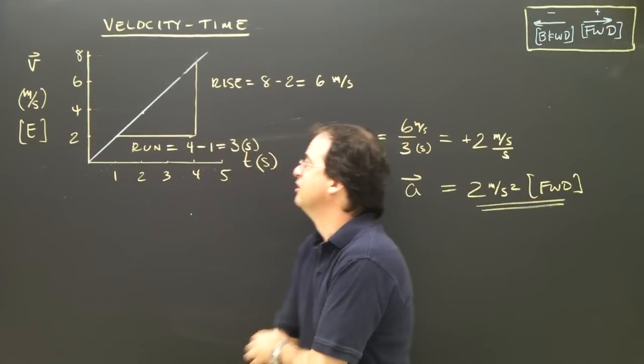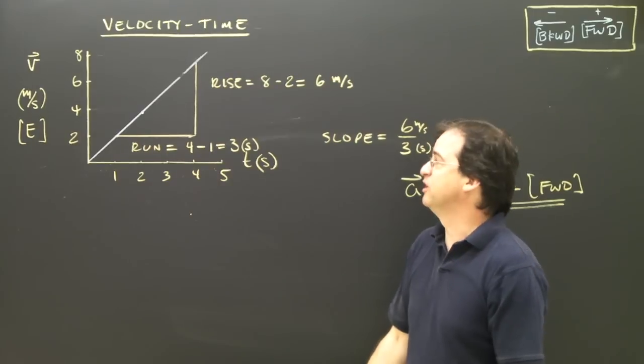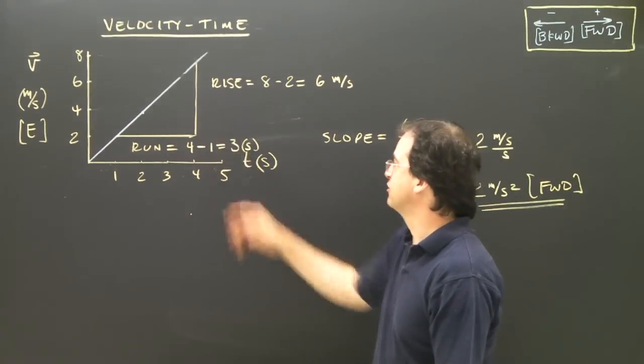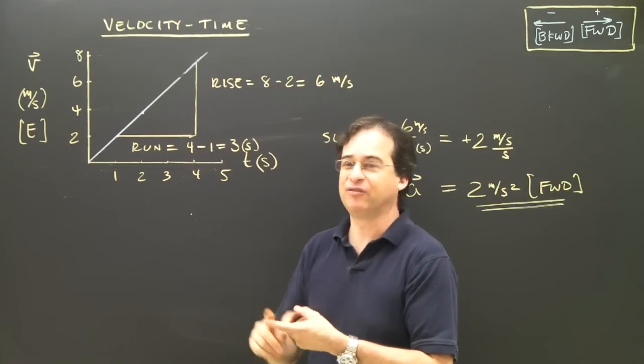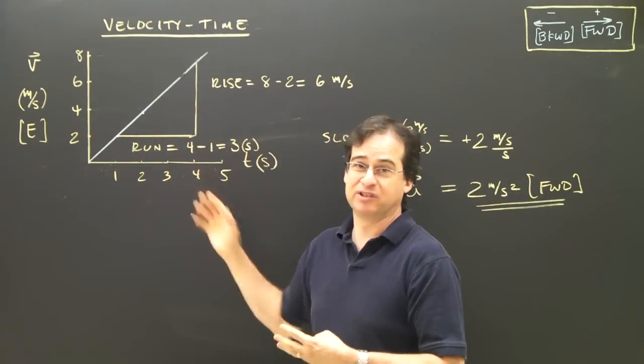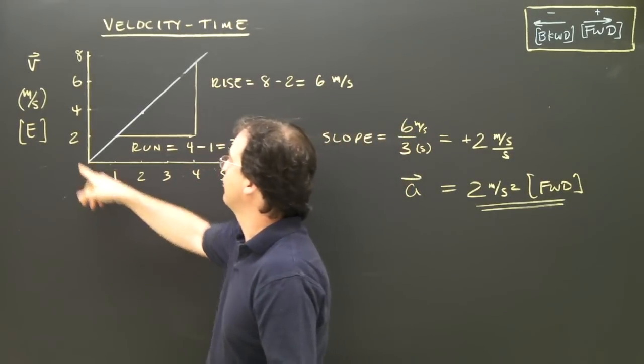Now let's take a second to describe what this object is doing in this graph. We've calculated the slope, and we said the slope is 2 meters per second squared. But let's remember we look at what type of graph it is, what the numbers tell us, and what the slope tells us.